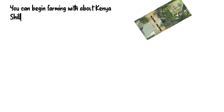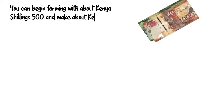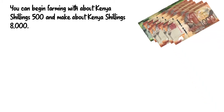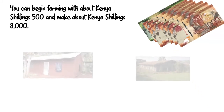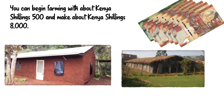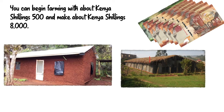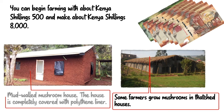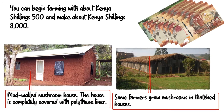Mushroom farmers report that you can begin farming with as little as 500 Kenya shillings, and from this investment you can make up to about 8,000 Kenya shillings. The first thing you need is a mushroom farmhouse. This can be made of wood and covered with a black polythene liner, or some farmers use grass-thatched mud houses — the mud walls provide a good environment for mushrooms to germinate and grow. Temperatures must be kept low, humidity must be kept at the right level, and the house must be well ventilated using simple, affordable, and readily available materials.